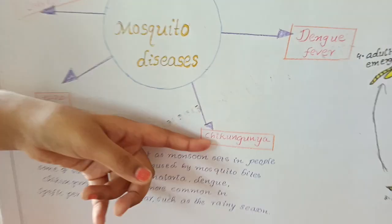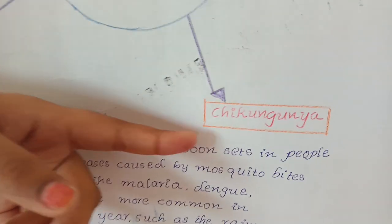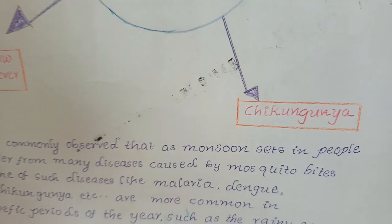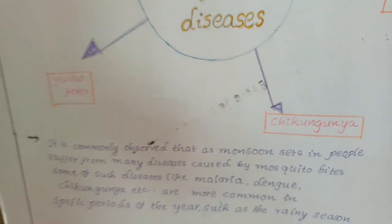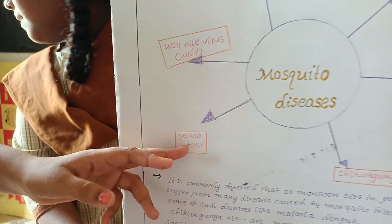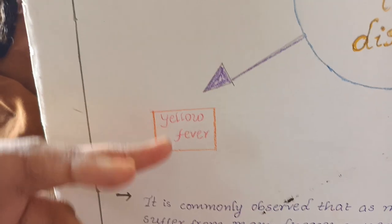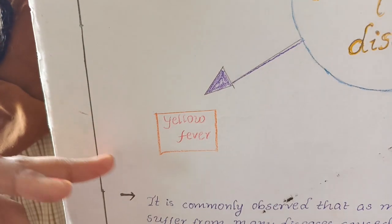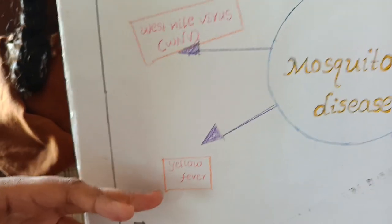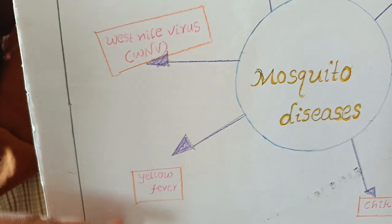Another mosquito disease is Chikungunya. Chikungunya is an RNA virus related to the alphavirus group. Next is Yellow fever, which is also caused by a virus. It is very rare and is found only in South Africa and some other places.